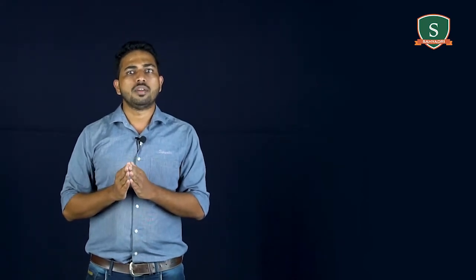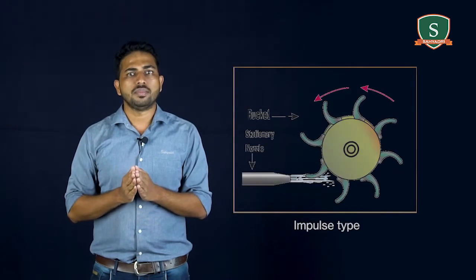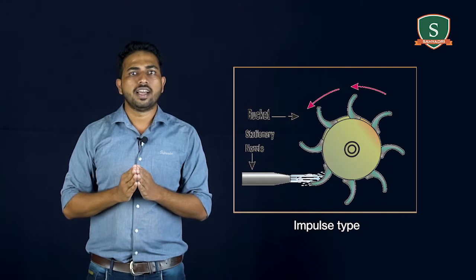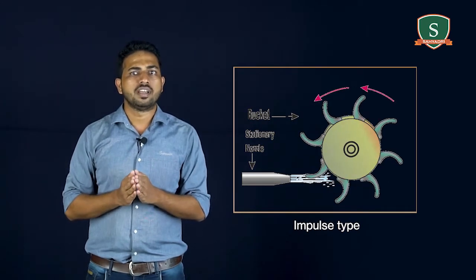Now the third classification based on the type of energy exchange occurring in the rotor. First one is impulse type. Energy exchange is due to change in the direction of the fluid as it flows over the rotor blades. Examples: paddle wheel, pelton wheel.